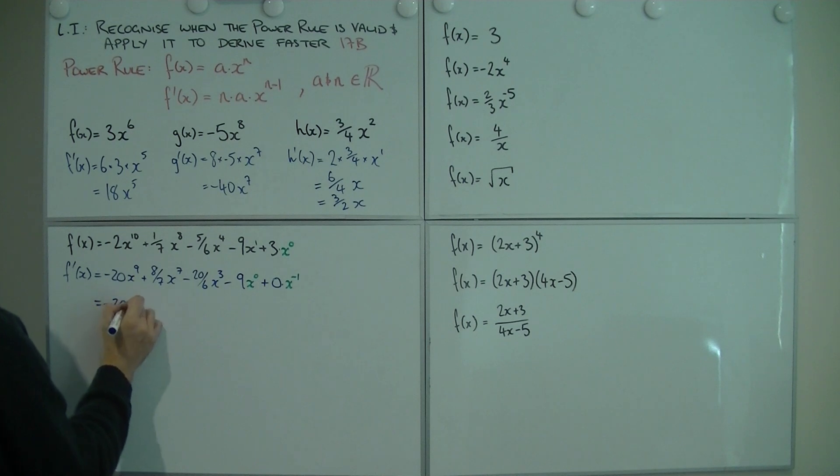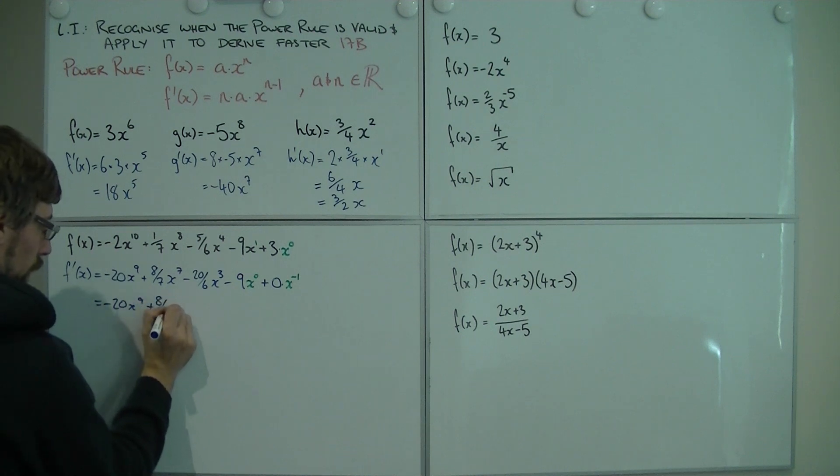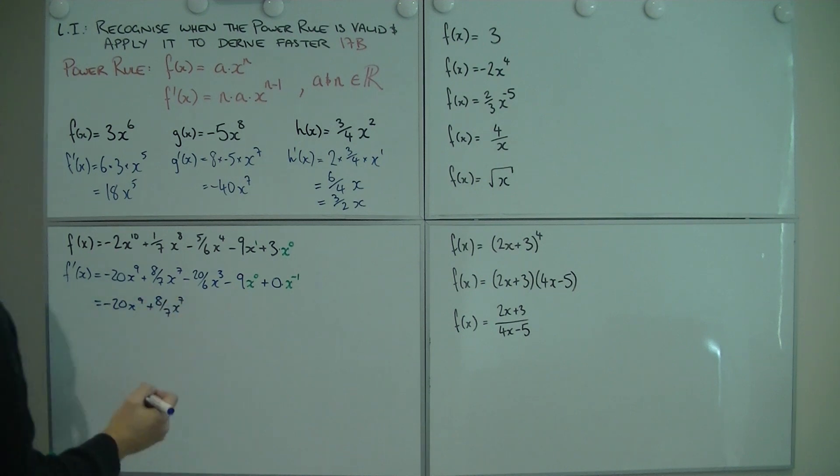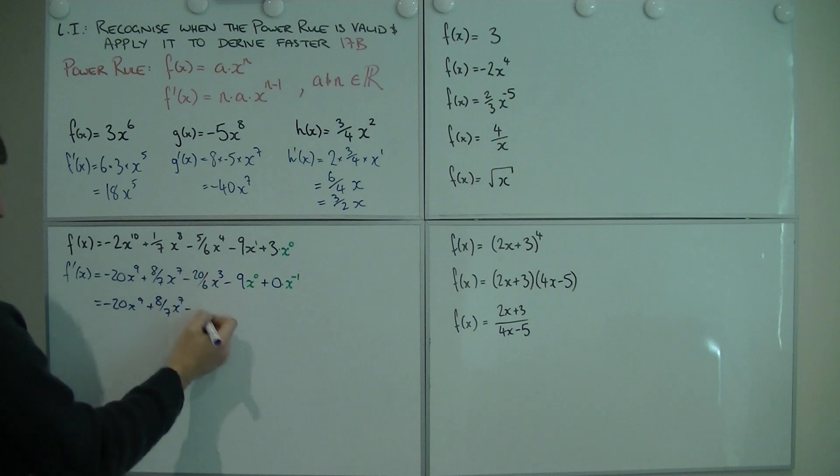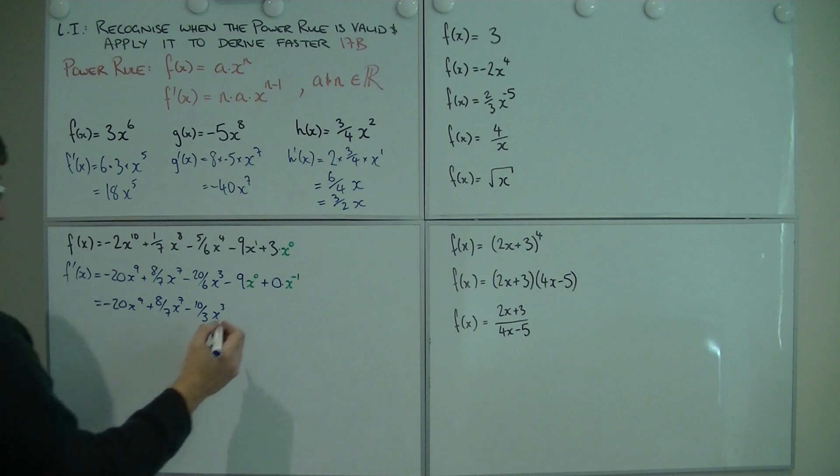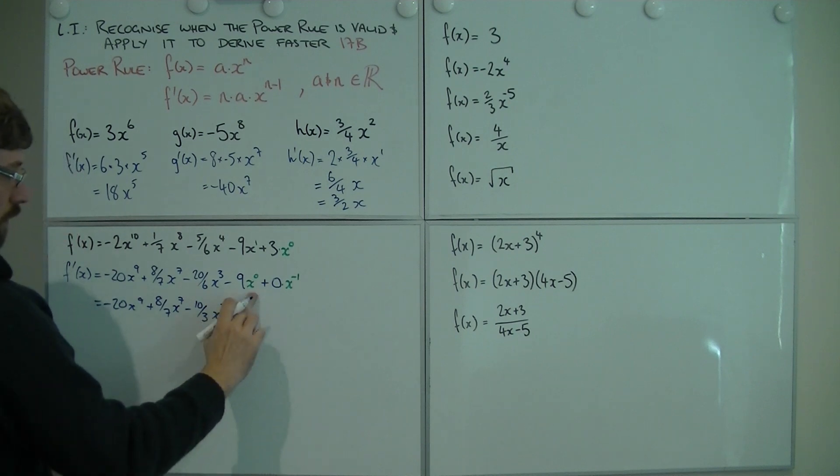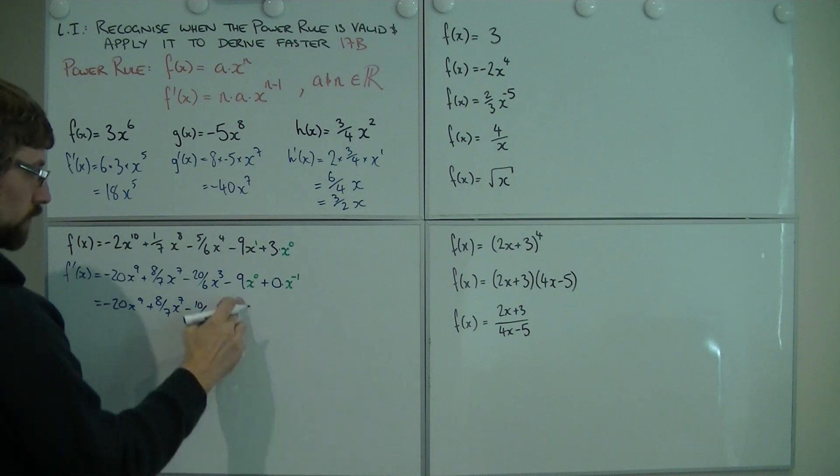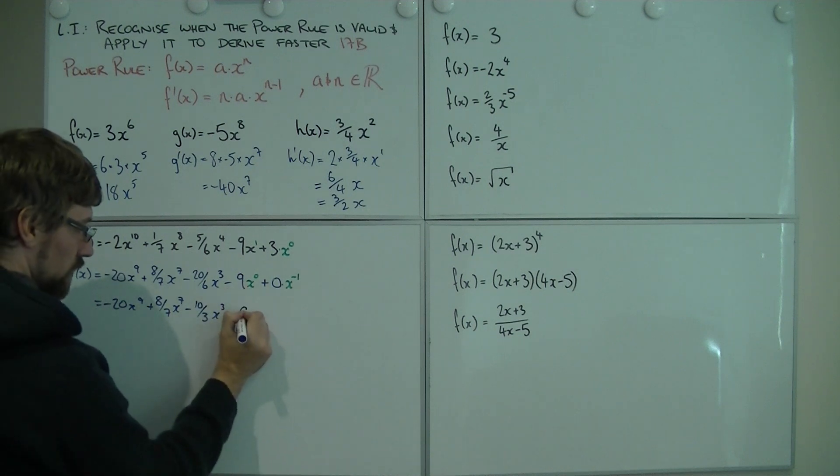This thing - that's just that, don't have to simplify anything. This guy - you could change it into a mixed number, but don't. Just leave it as improper, because life is always easier with improper. Minus - this thing I can actually simplify. So we've got 10 on 3 x to the 3. Minus - now this green guy, x to the 0. What's x to the 0? Well, that's just 1. So this is the same as 9 times 1, so that's just 9.